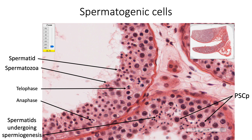The total time taken for a spermatogonium to become a mature spermatozoon is about 64 days. A cross section of one seminiferous tubule may show different phases of spermatogenesis along its circumference because the spermatogenic cycle progresses in a spiral wave. Although the spermatozoa formed here are structurally mature, they attain motility only when they reach the epididymis.